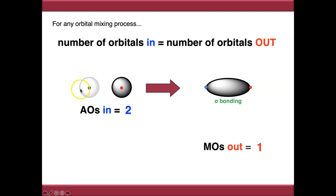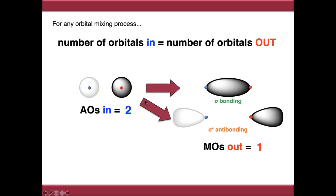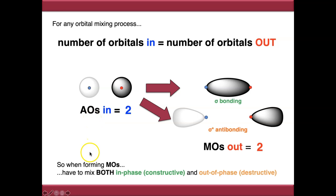The orbital you get from in-phase mixing, or constructive overlap, is your bonding orbital. The orbital you get from out-of-phase mixing, or destructive overlap, is your corresponding antibonding orbital. So to make the equation balance, whenever we mix two atomic orbitals together, we have to mix them both in phase to give us a bonding orbital, and out of phase to give us an antibonding orbital.